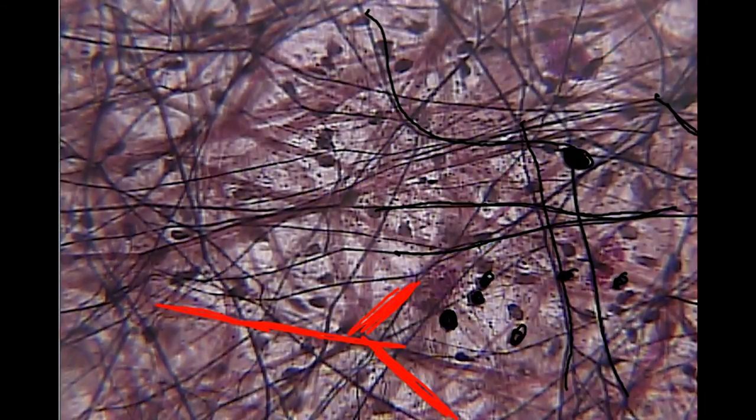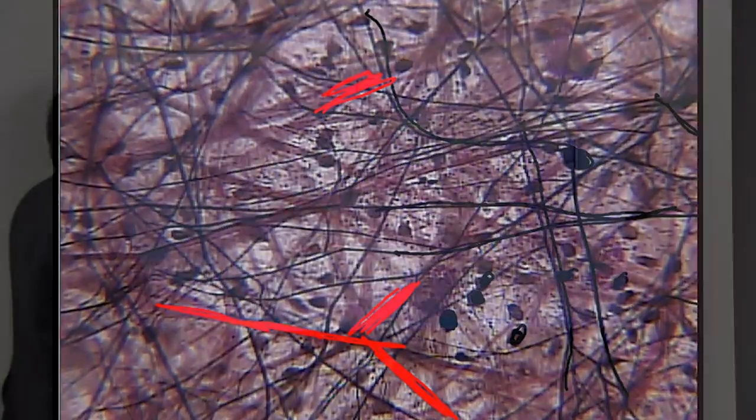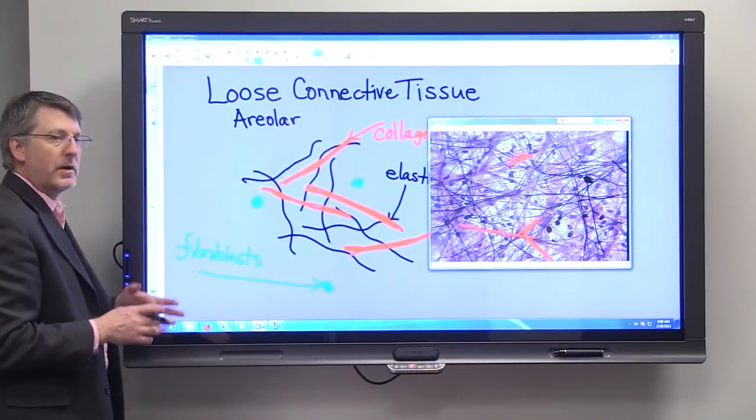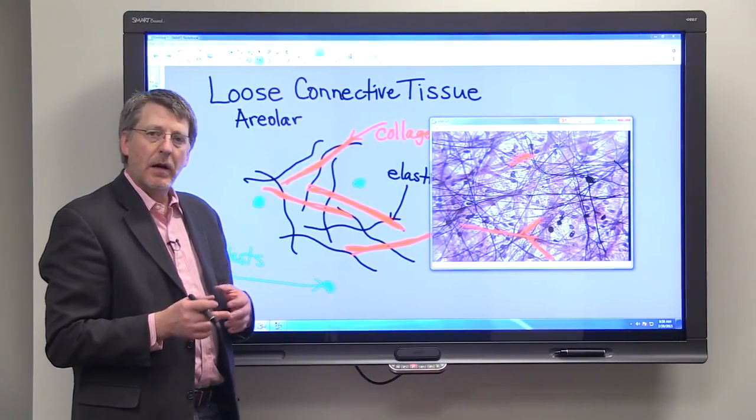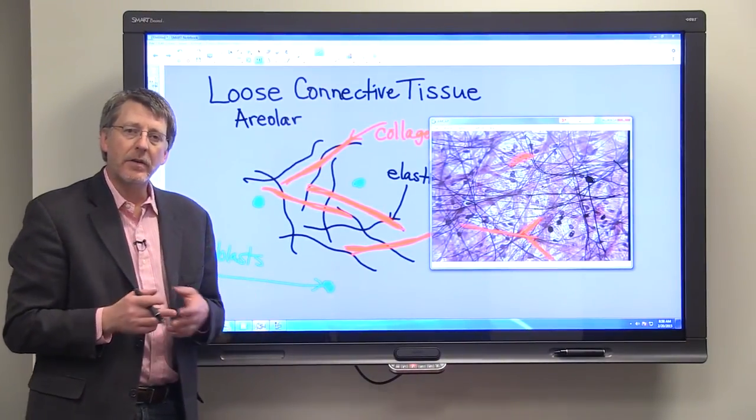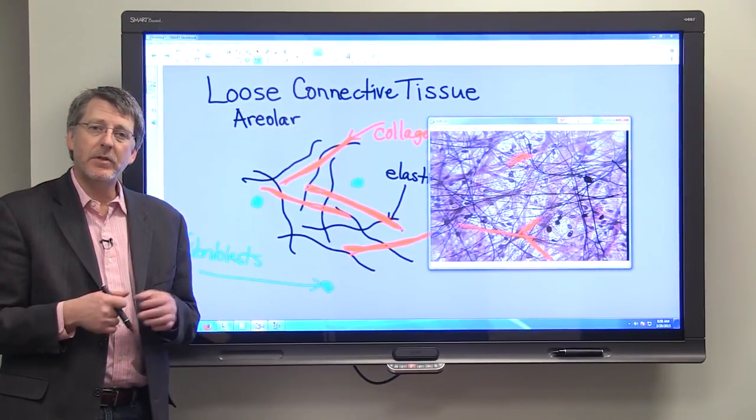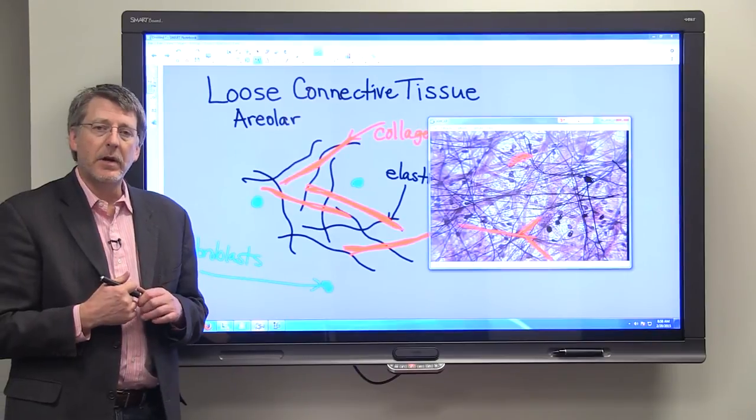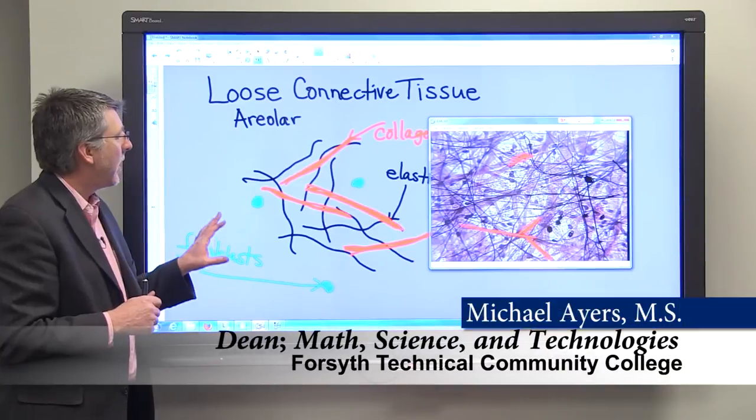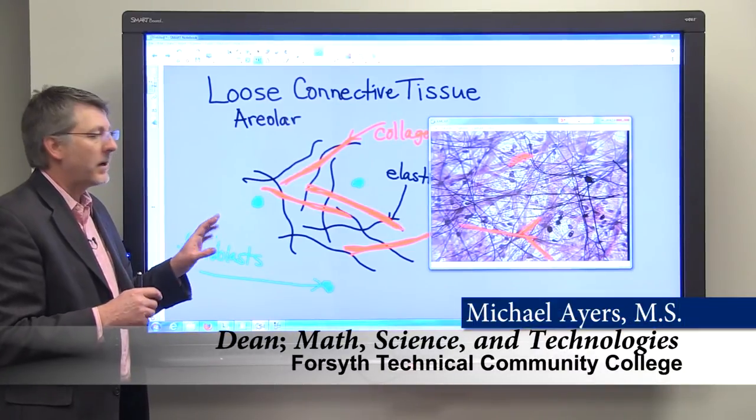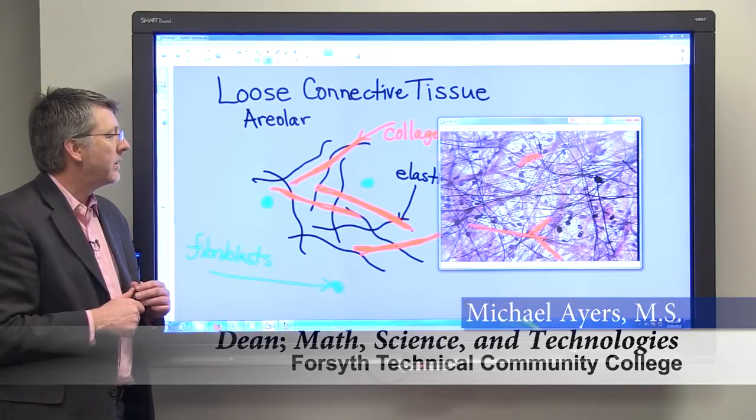Loose connective tissue binds structures together. It's found between muscles, under the skin, and in the digestive system just deep to the mucosa. It actually is a major portion of a layer called the submucosa. It's a very good tissue because it has an elastic quality, but it's also quite tough.